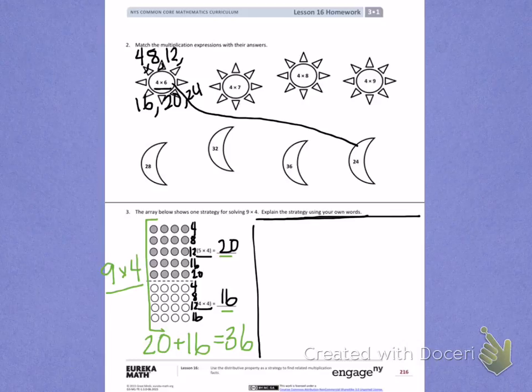Think about what we just did in solving our two separate multiplication problems to find the total for 9 times 4 and try to write that in your own words.